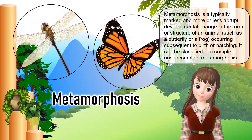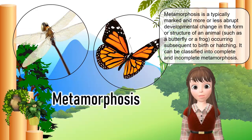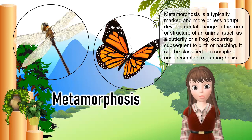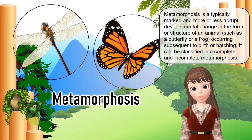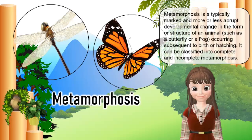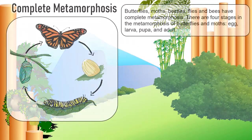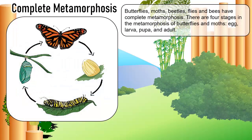Metamorphosis is a typically marked and more or less abrupt developmental change in the form or structure of an animal, such as a butterfly or a frog, occurring subsequent to birth or hatching. It can be classified into complete and incomplete metamorphosis. Butterflies, moths, beetles, flies, and bees have complete metamorphosis.